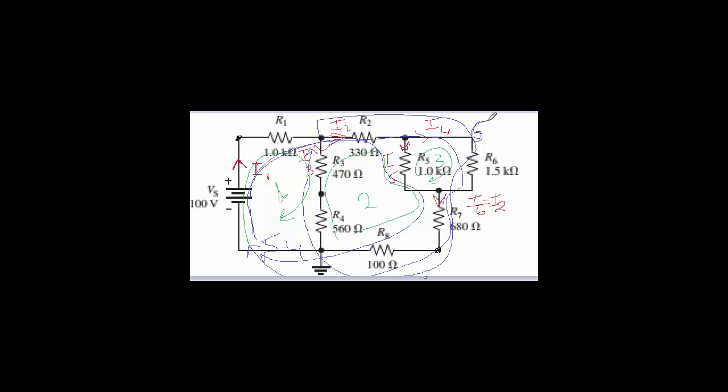So we have five unknowns and we already got ourselves eight equations from six loops and two nodes. That's eight equations. Much more than we need.